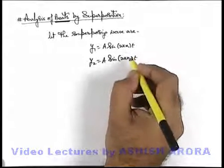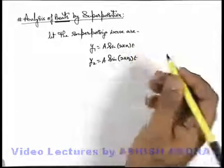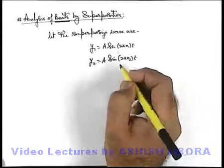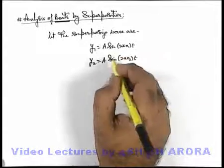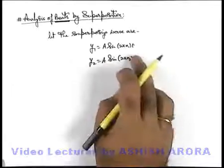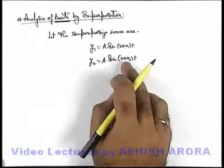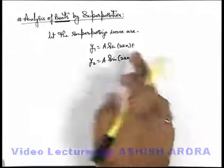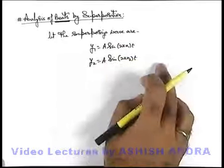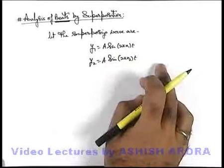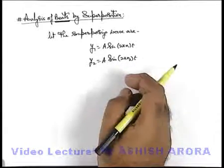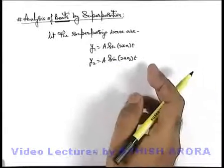Here n1 and n2 are the two frequencies which are very close to each other. In this situation, if we superpose the two waves on a medium particle, we have not taken any initial phase or phase difference because if the two waves have different frequencies, their phase difference periodically varies with time. So we should not take any phase difference because it is continuously changing.